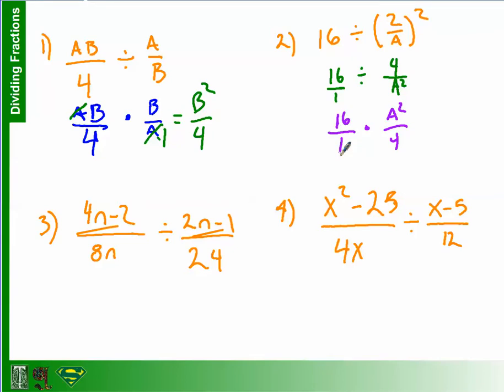Any guesses on what we do next? The process does not change. Betsy? Cross-reduce. All right. What shares a factor here? 16 and 4. 4 goes into 16 four times. 4 goes into 4 once.